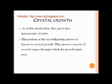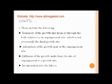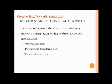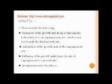The steps for the formation of crystal growth are: first, the transport of growth units from or through the bulk solution to an adsorption site, which is not necessarily the final growth site — the crystal growth may occur at the adsorption site, or afterwards the growth units may be transferred to the growth site. Second, adsorption of the growth unit at the site. Third, diffusion of the growth unit from the site of adsorption to a growth site. Finally, incorporation into the lattice, which is the last step in crystal growth.